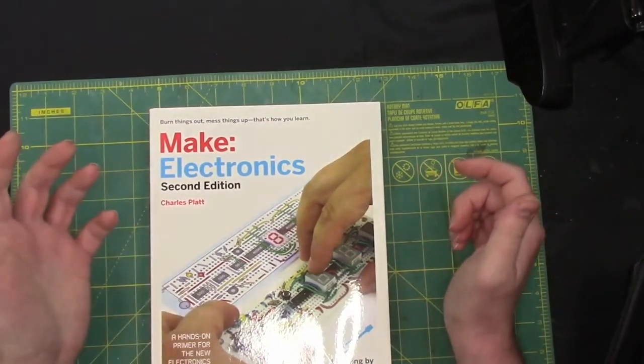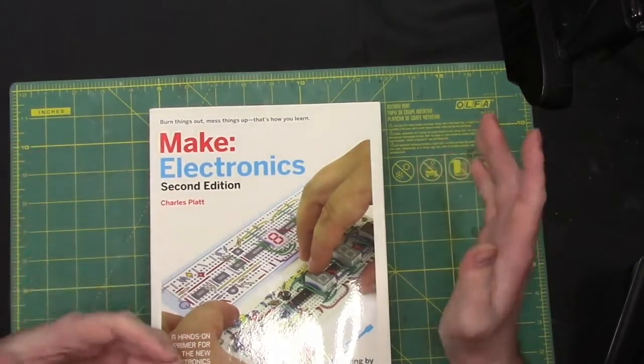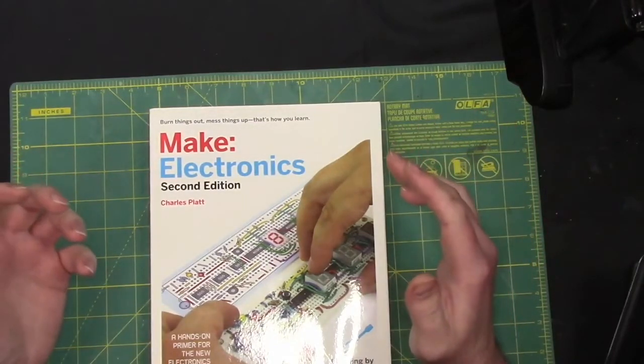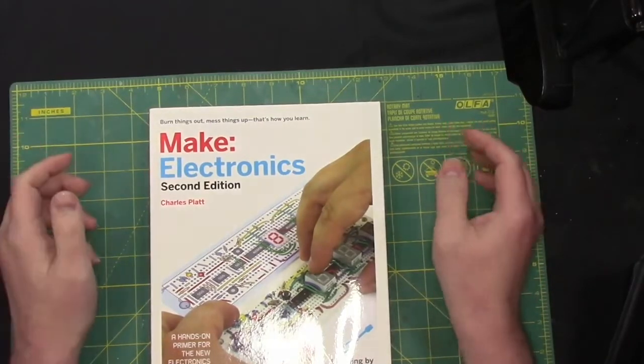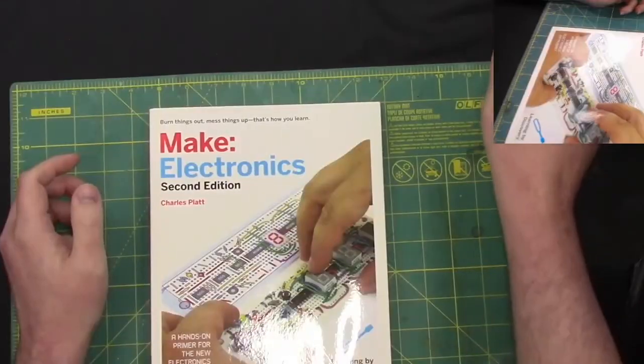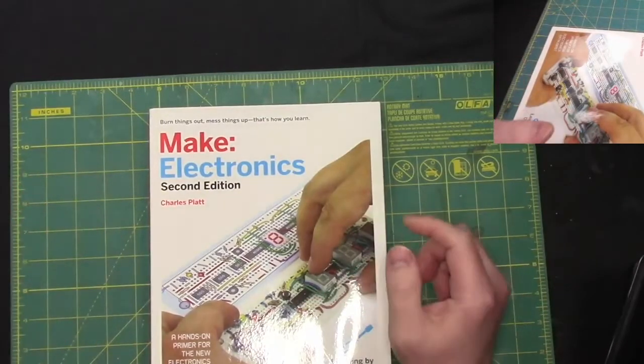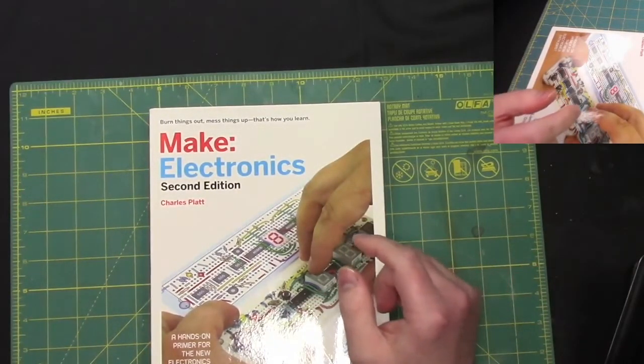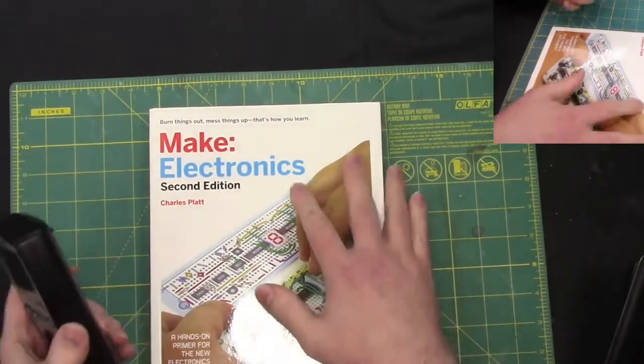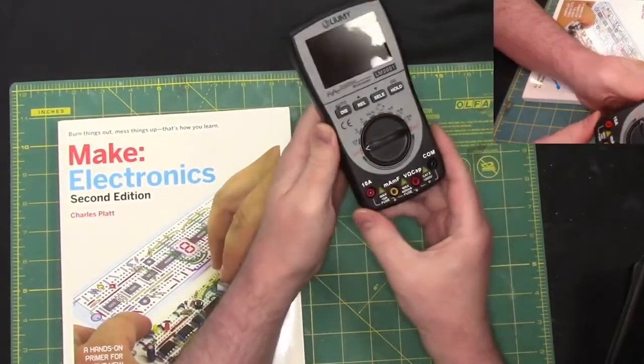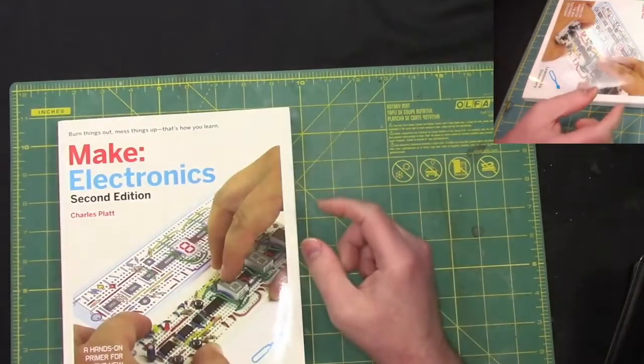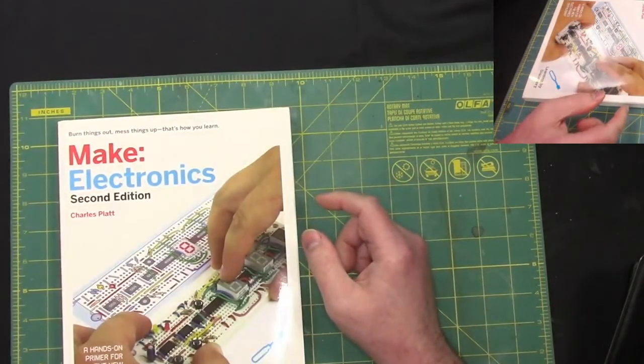I've held off on continuing this series because of the lack of space and camera angles I had before. But now that I can have two angles—I can have the main screen here for the electronics and then a side view of any meter readings or tests.